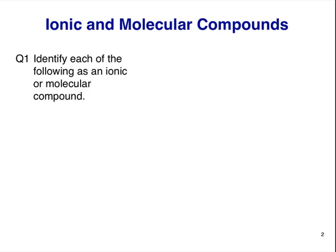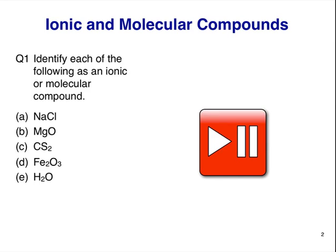Question 1. Identify each of the following as an ionic or molecular compound. NaCl, MgO, CS2, Fe2O3, and H2O. Pause the video here and decide.